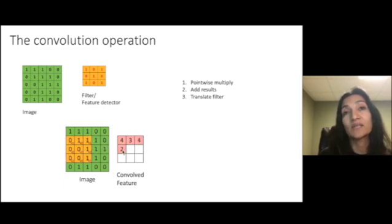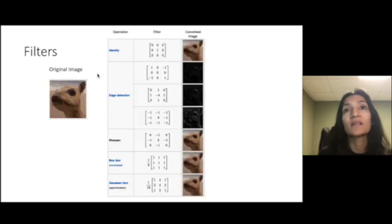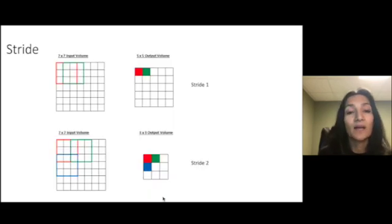And so this is the idea of searching for a particular feature or feature detection with a filter. So it's been shown that deep neural networks actually learn very interesting filters that can go from very low level to very high level features as well as operations on the image.